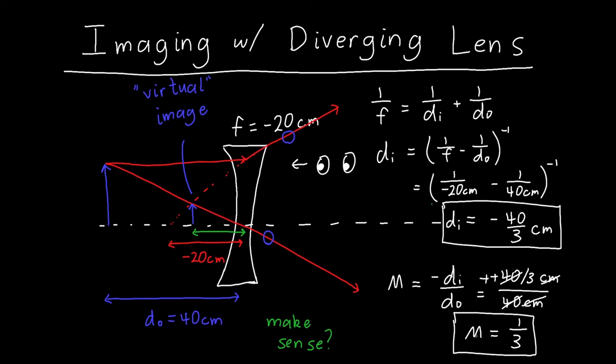Similarly, we expected the magnification to be one-third and positive, so the image should be pointing in the same direction as the object, which it is, and it should be about a third the size, which we see it is. So we're pretty confident that we've done this ray tracing correctly.